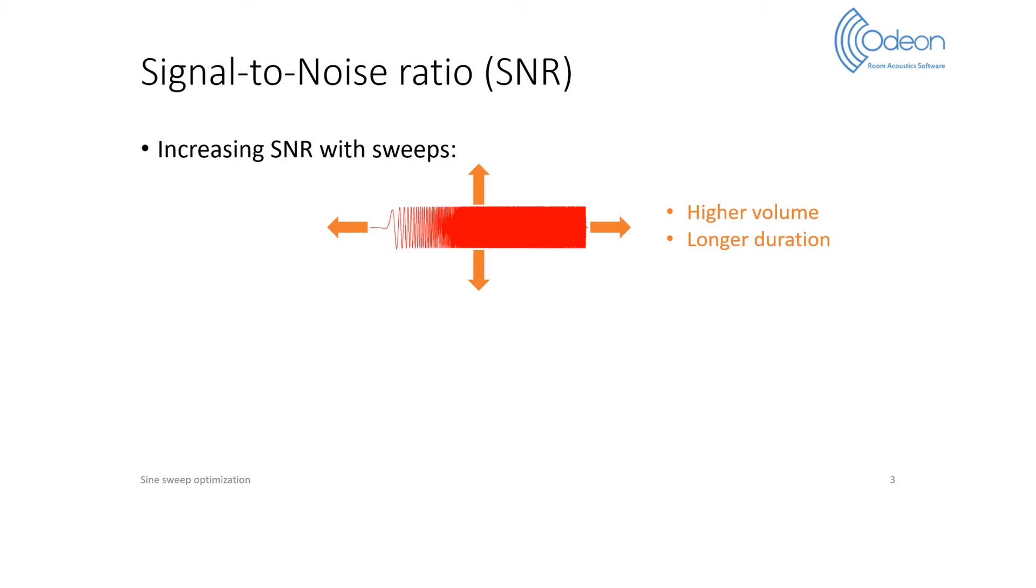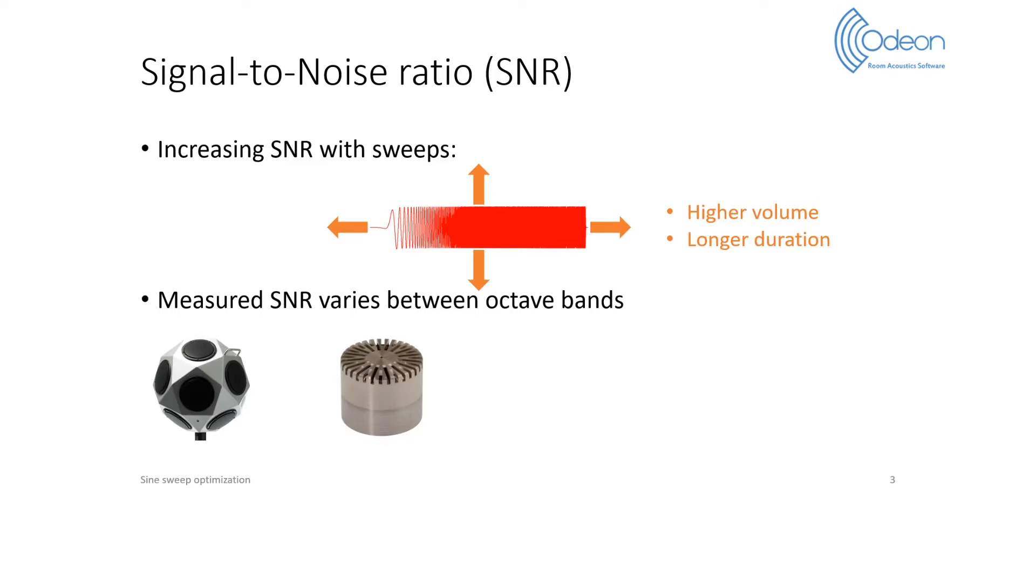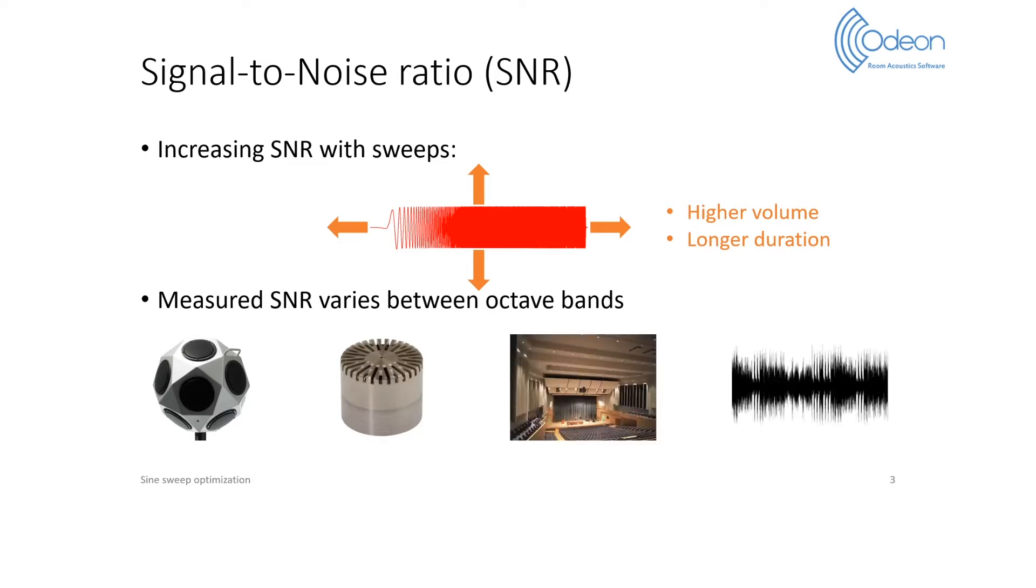This second solution can be advantageous to ensure that the drivers of the source are not damaged by too high levels. However, the SNR measured at the receiver position can still vary. Some of the factors affecting it are the response of the source, the receiver, the room, and the presence of background noise.